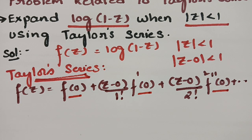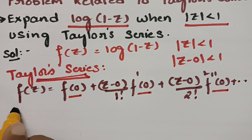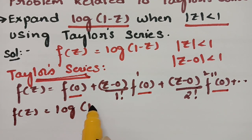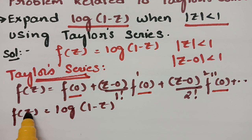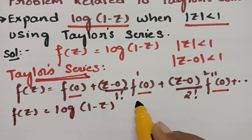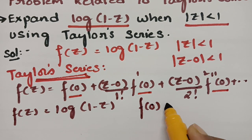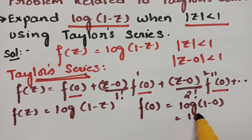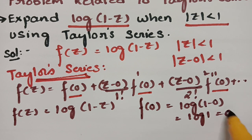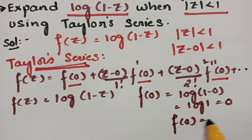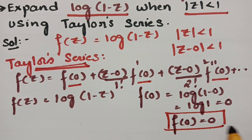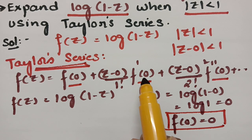What is f(z)? It is log(1 - z). To find f(0), we substitute z = 0, giving log(1 - 0) = log(1) = 0. So we get f(0) = 0.